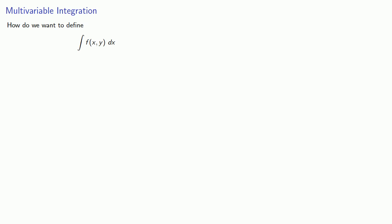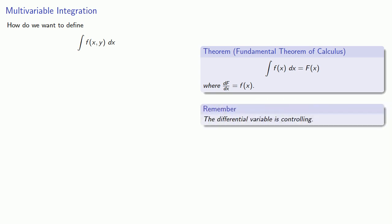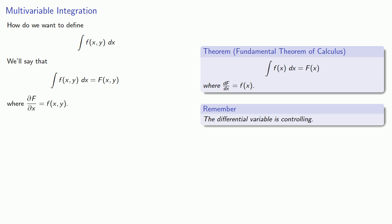How do we want to define an integral where our integrand is a multi-variable function? Remember, one version of the fundamental theorem of calculus is that the integral of some function is a function whose derivative is the integrand. The differential variable is controlling — because this was an integral with respect to x, our derivative was also taken with respect to x. This suggests that we can define this multi-variable integral to be some function where the partial of f with respect to x is the integrand.